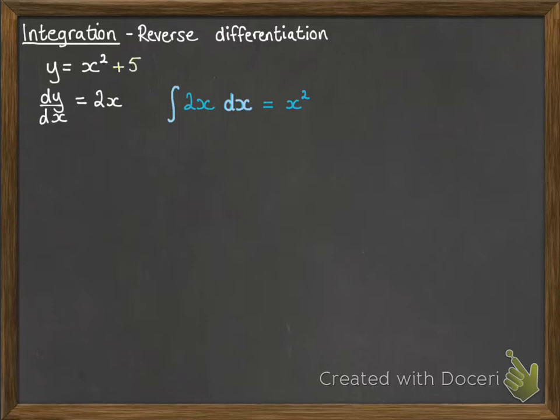Now this could actually have started as x squared plus 5 and still differentiated to 2x. Because when you add on a constant, once you've differentiated, that becomes 0. It could also just as easily have been minus 10 or any other sort of constant.